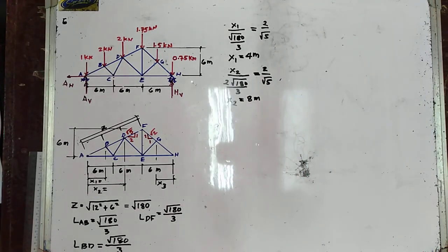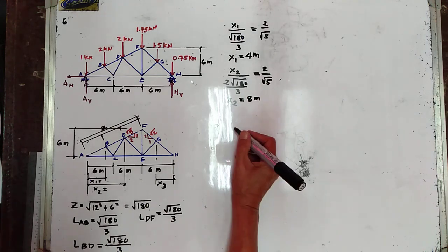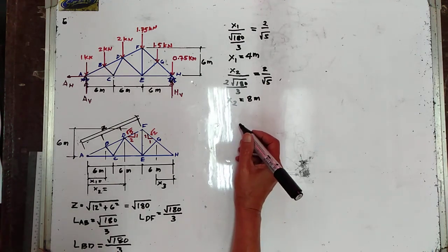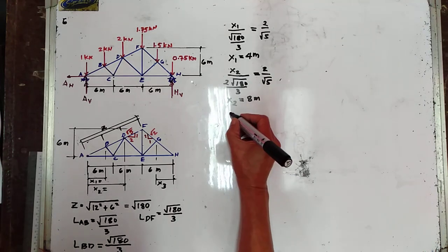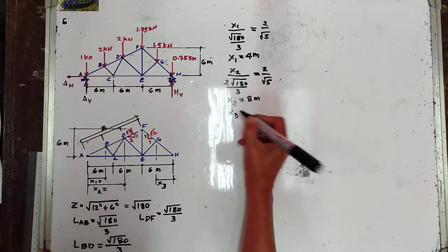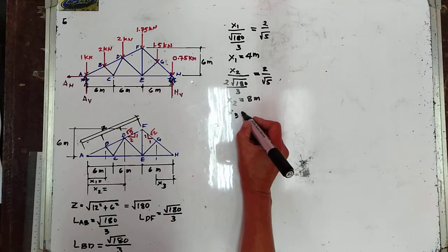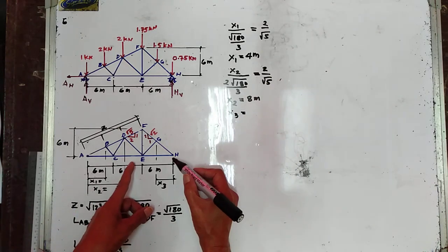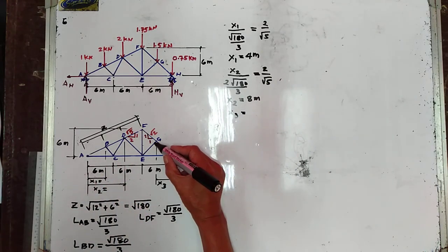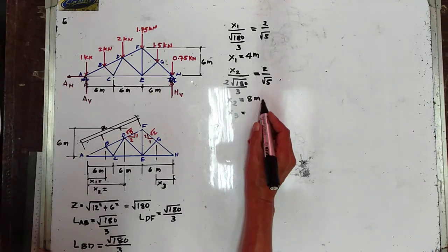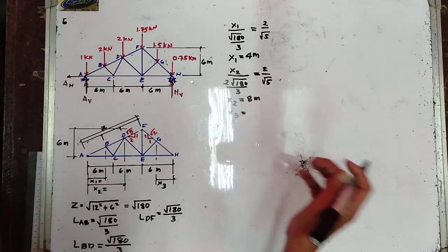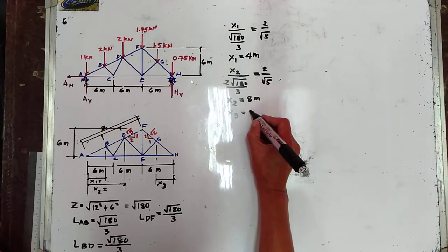Now for X3: since the perpendicular distance is 6, X3 is equal to 3 meters.